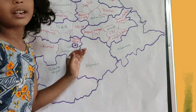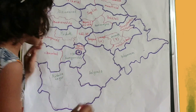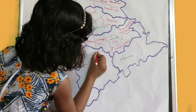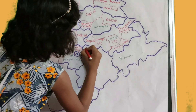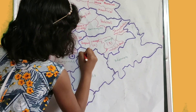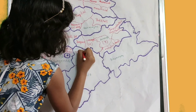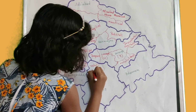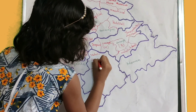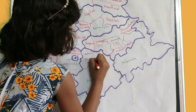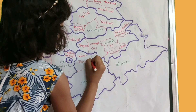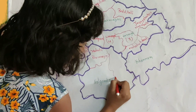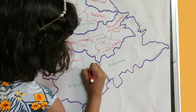Nalgonda district is divided into 3 districts: Nalgonda, Yadadri Bhuvanagiri, and Suryapet.